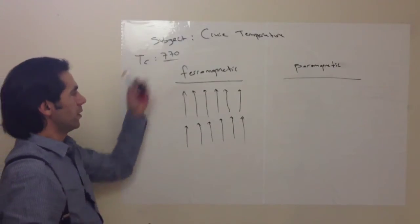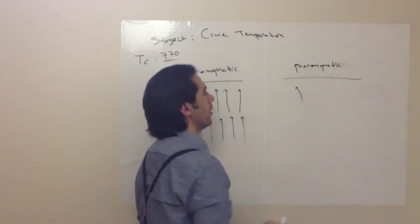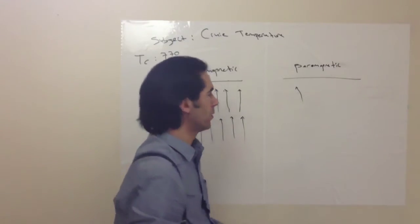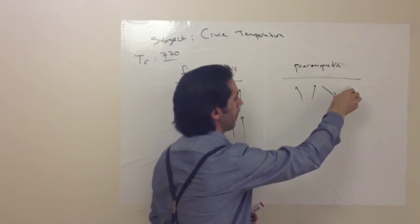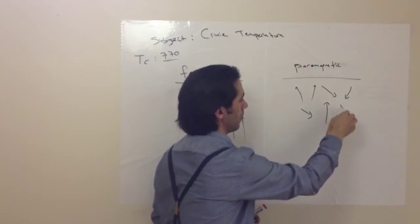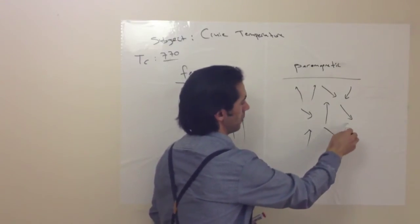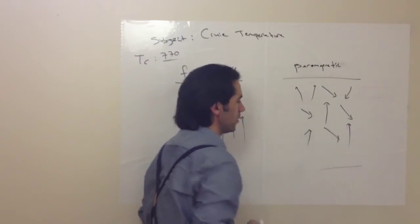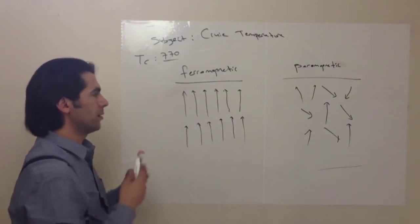When we pass that temperature, the spins—magnetic spins—they move randomly. So because of that reason, it's not attracted by magnet anymore.